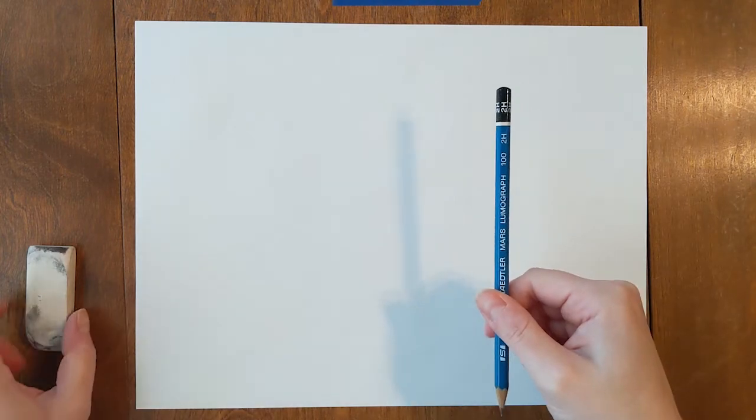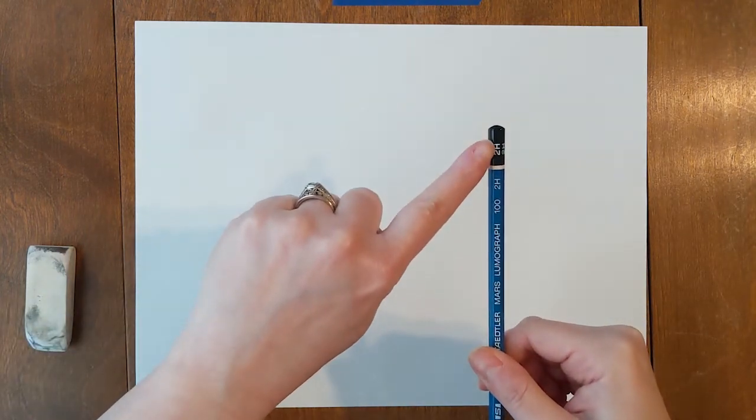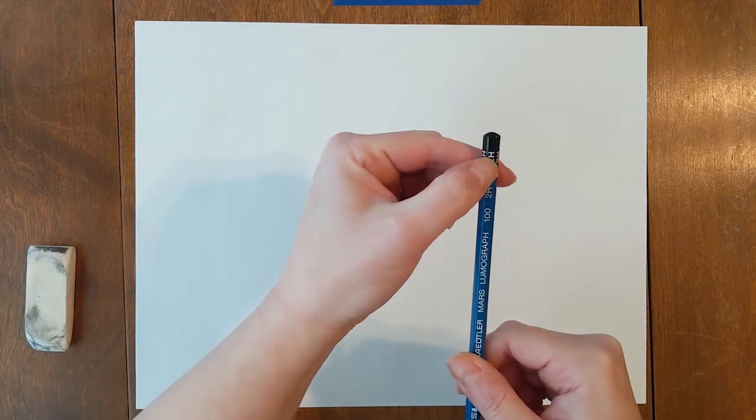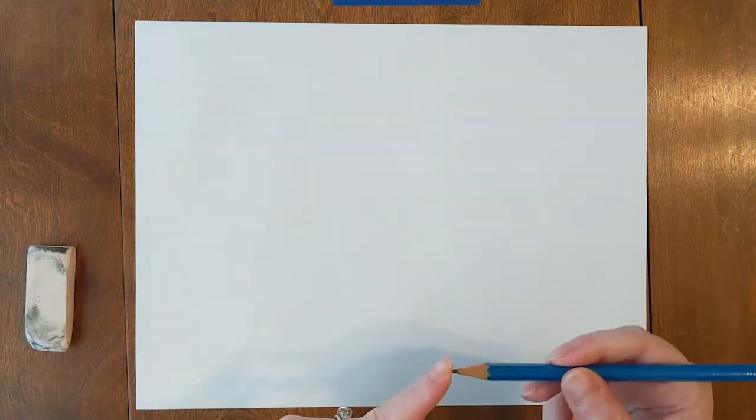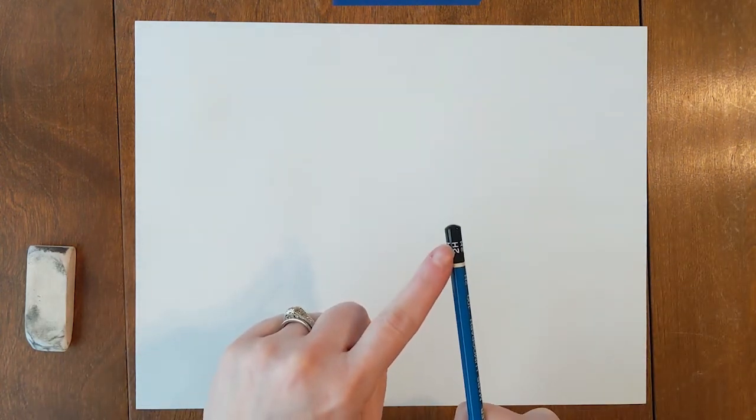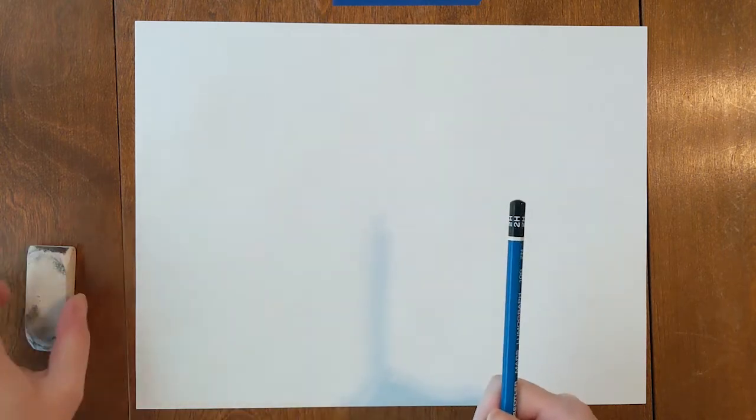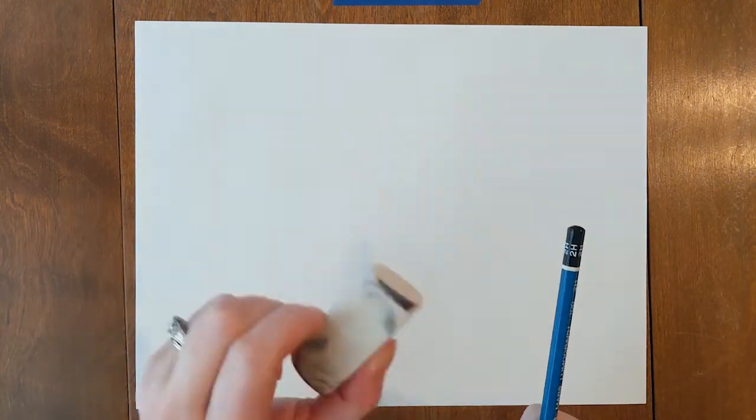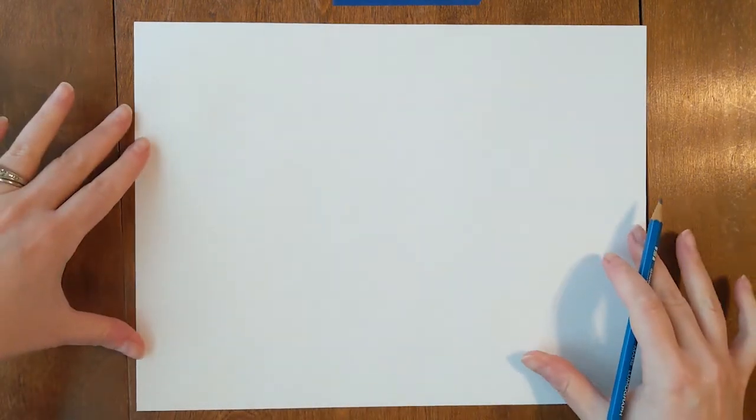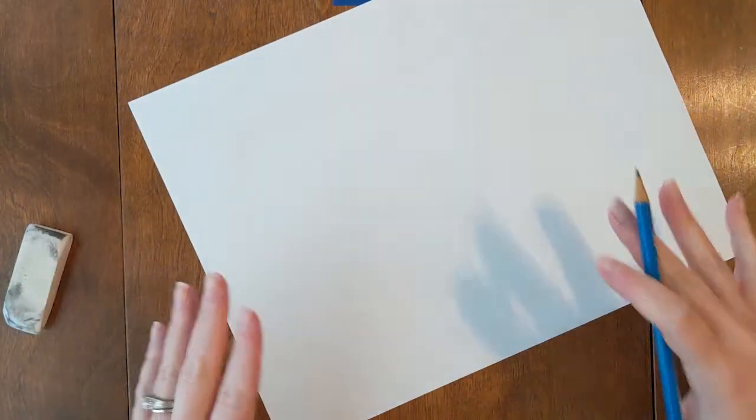So looking at my paper here, I have my 2H pencil. It's going to be nice and hard, because it's got an H on it. And that's how I know it's going to make a light line. The harder my lead is, the lighter my line is going to be. And I have my handy dandy eraser that I always have with me.